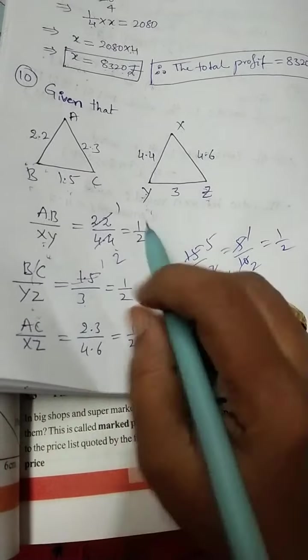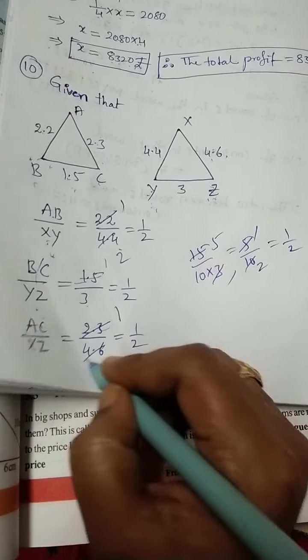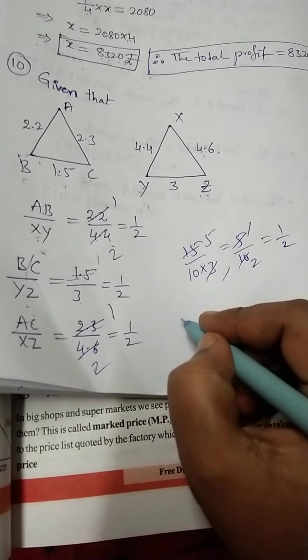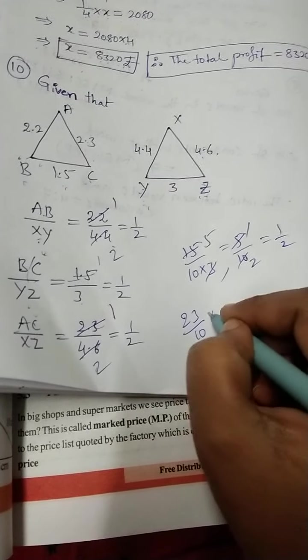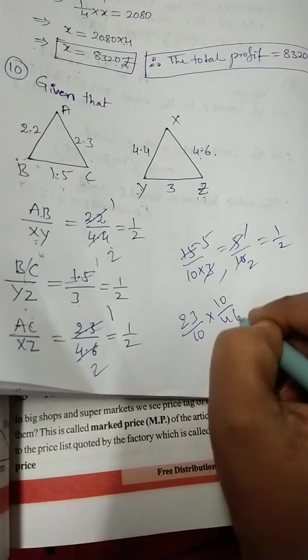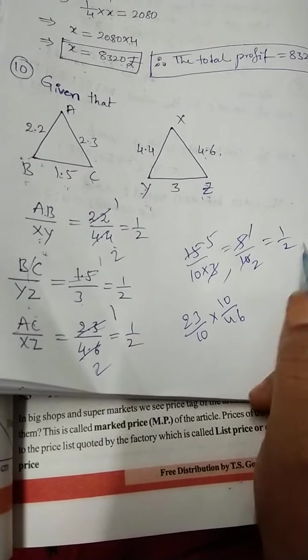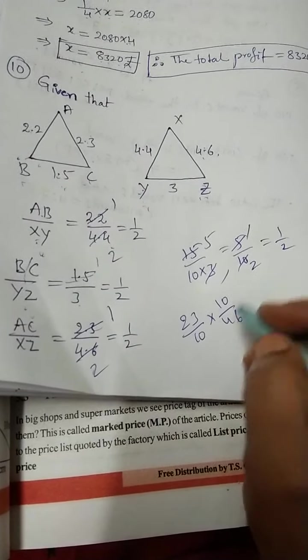AC by XZ, AC is 2.3, XZ is 4.6. Now directly, 23 ones are 23, 2s are 46. Otherwise, you can take 23 by 10 into 10 by 46. If you remove the decimal point, that's what. So 10, 10 will cancel, 23 by 46. 23 ones are 23, 2s are 46, 1 by 2 you will get. All are same.